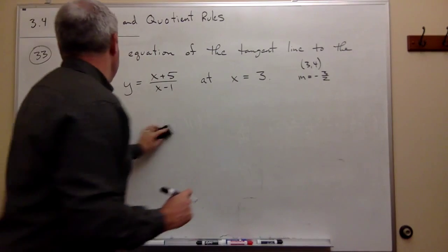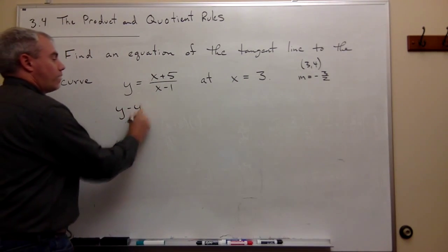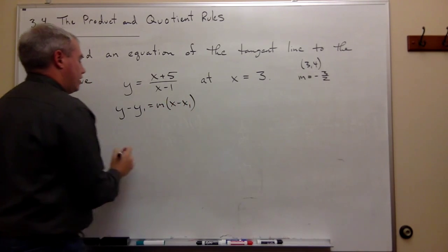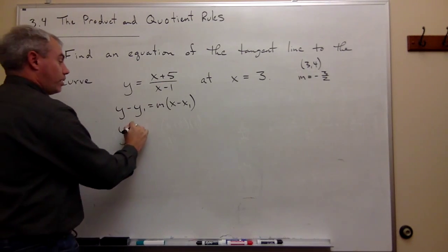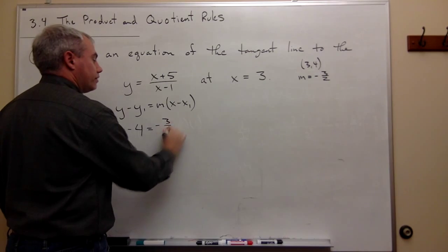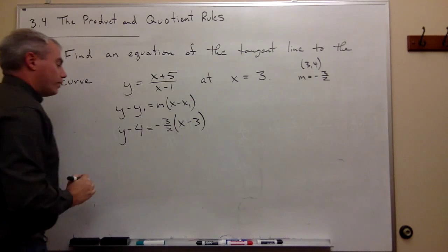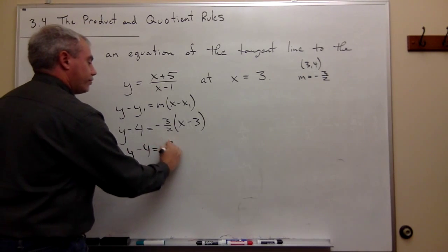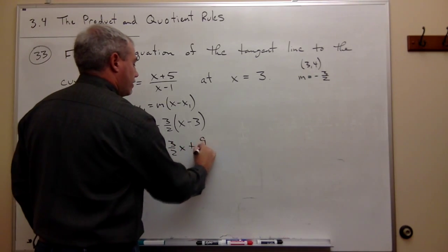Now we just want to use the point-slope equation of a line: y minus y1 equals m times x minus x1. So I get y minus 4 is equal to minus 3 over 2 times x minus 3. So we get y minus 4 equals negative 3 over 2 x plus 9 over 2.